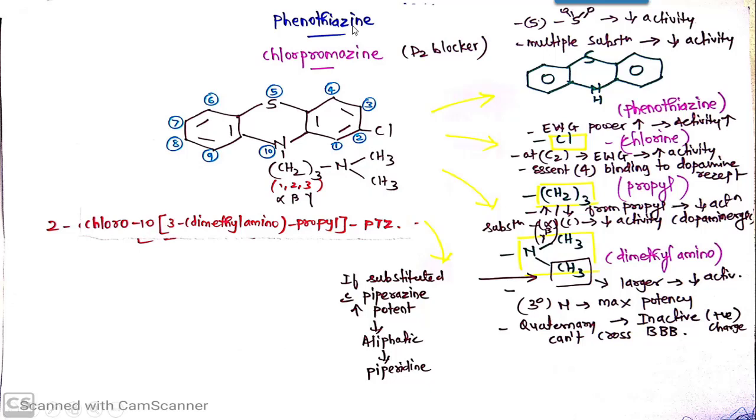So it is Chlorpromazine. This is Chlor for chlorine, Pro for propyl, Ma for methyl, Aza for nitrogen.